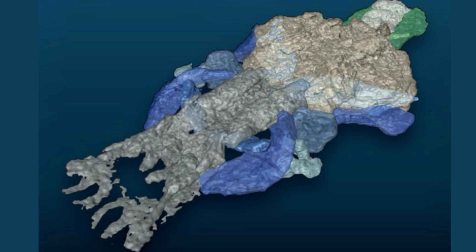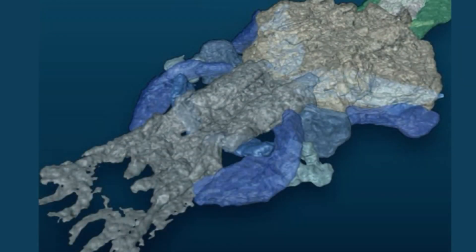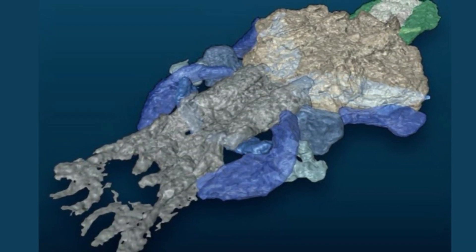Both these animals belonged to the taxon of lobefin fishes, or Sarcopterygians. All tetrapods evolved from some Sarcopterygians, these Sarcopterygians and their tetrapod descendants are known as tetrapodomorphs.